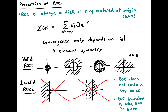Here are some valid regions of convergence. We can have a region of convergence that's inside some radius, outside of some radius, one that looks like a doughnut, or one that covers all Z where all values would be valid. These are valid regions of convergence and they all have this circular symmetry.